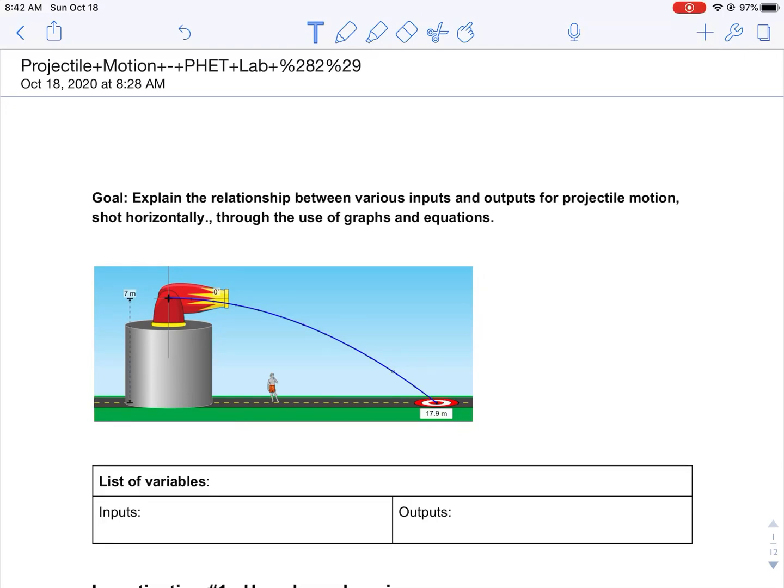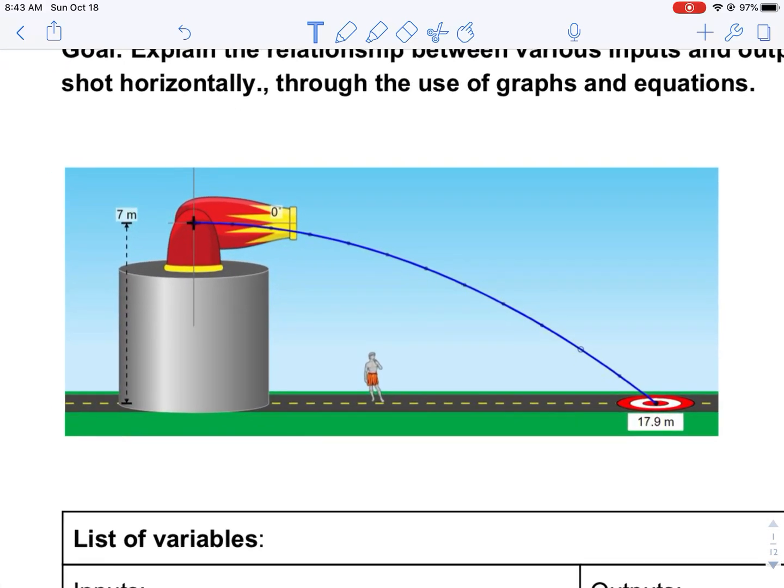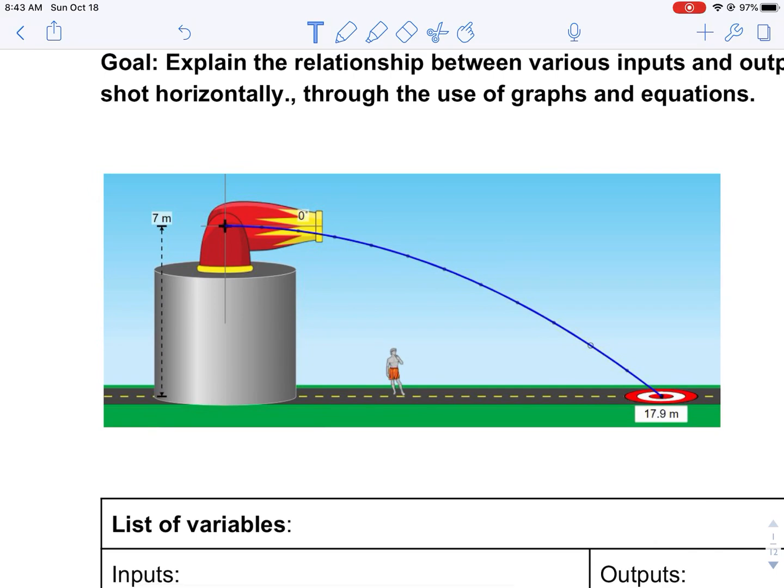In the first part of the FET projectile motion lab, we are going to figure out what are our inputs and our outputs. The inputs are the things that we can actually control, and the outputs are the things that might become affected as we modify the inputs. So, we can change the height of the cannon.